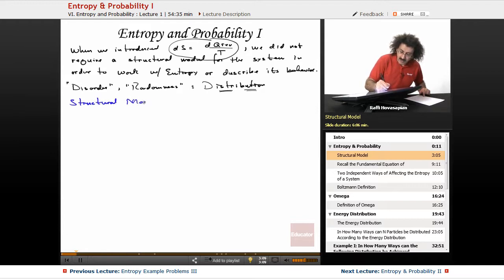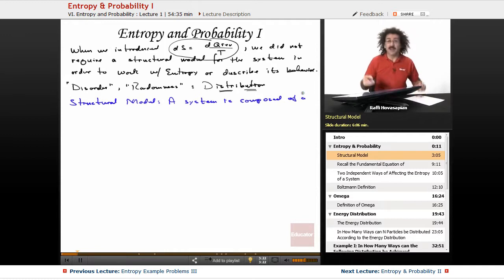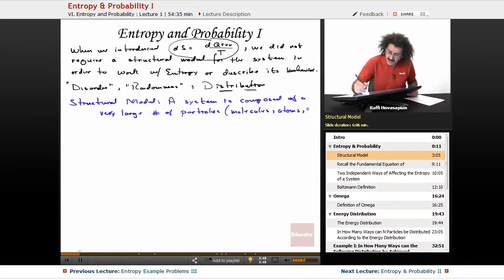So, our structural model is exactly what you think it is. A system is composed of a very large number of particles. That's it. And those particles could be molecules. They could be atoms. They could be ions. Whatever it is that you happen to be discussing in that particular problem. Molecules, atoms, and ions.